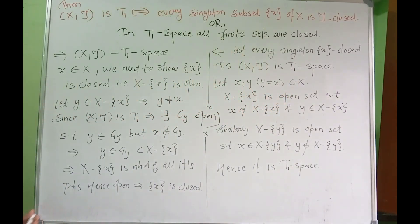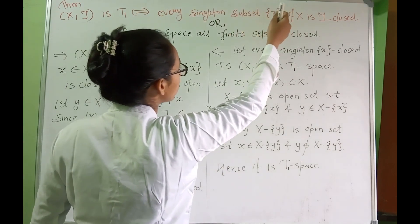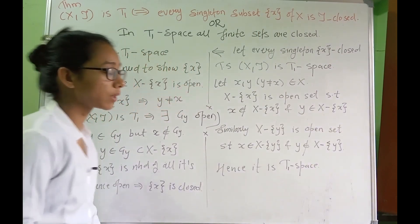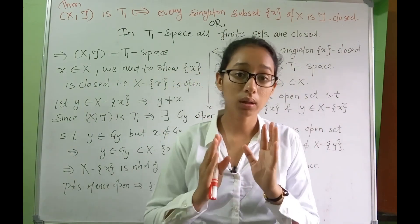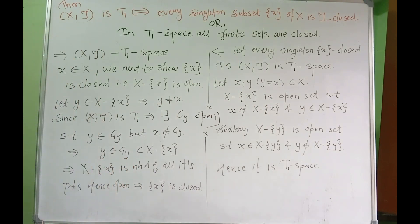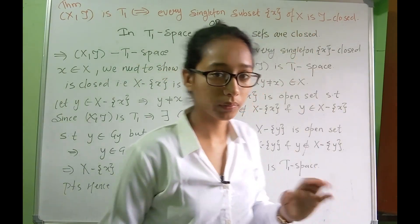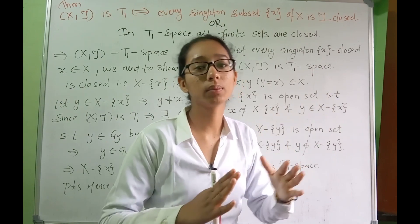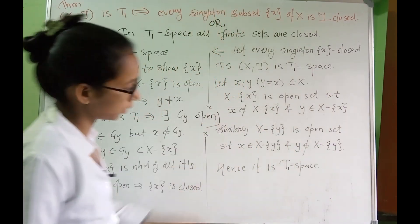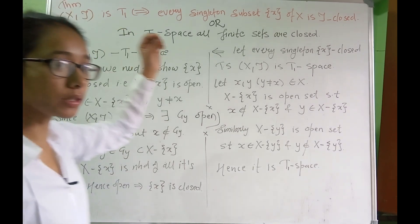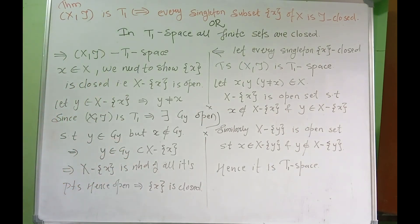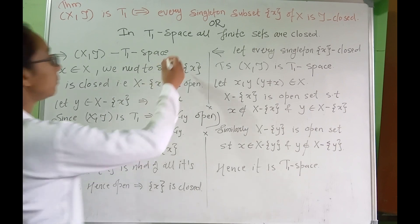Now let's talk about an important theorem that is often asked in exams: a topological space X, T is T1 if and only if every singleton subset {x} of X is closed. This means a topological space is T1 if and only if all its singleton sets are closed. Since if and only if is a two-way condition, we will solve it in two parts. First, assume X, T is T1 and show that singleton sets are closed.